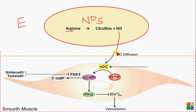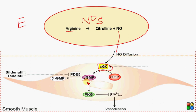This nitric oxide diffuses from the endothelial cell into the vascular smooth muscle. Inside the vascular smooth muscle, it activates guanylyl cyclase enzyme, which catalyzes the conversion of GTP into cyclic GMP. So nitric oxide stimulated guanylyl cyclase inside the cytosol of the smooth muscle cell, and this enzyme catalyzed the conversion of GTP into cyclic GMP.